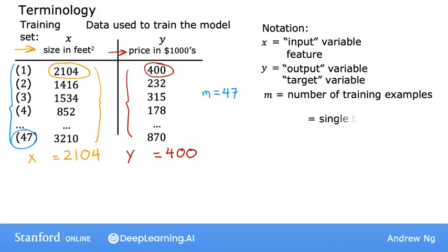To indicate a single training example, we're going to use the notation parentheses x comma y. So for the first training example, x comma y, this pair of numbers is 2104 comma 400. Now we have a lot of different training examples - 47 of them, in fact.